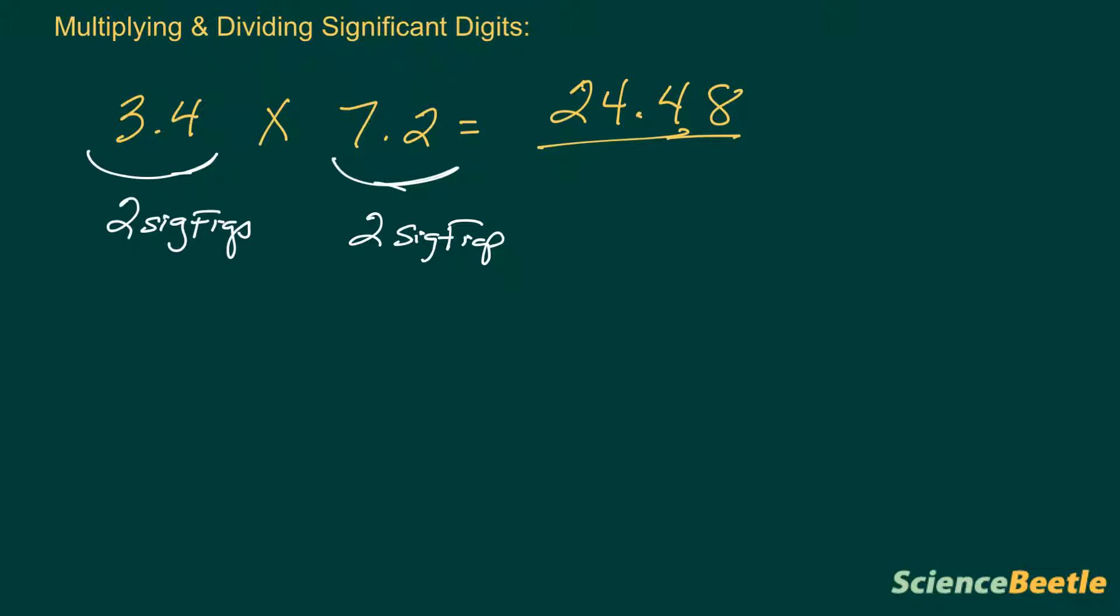When I look at my final answer, I cannot report a final answer that is greater than the least number of significant figures for any number provided in the problem. When I look at this, the significant figure count, we know that the 2, 4, 4, and 8 in that answer are all significant, but I can only report the first 2.